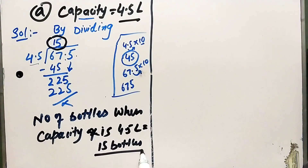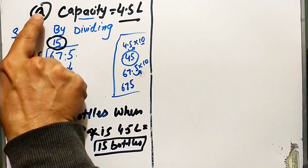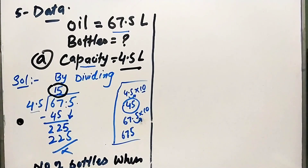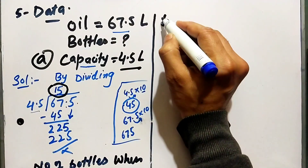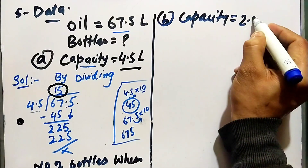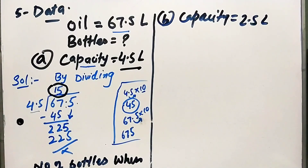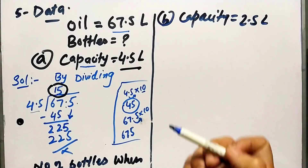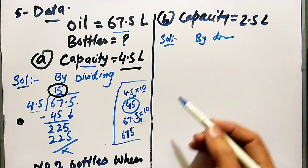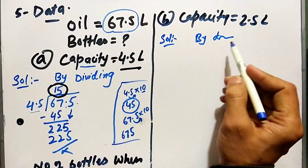The number of bottles is 15. Clear? The number of bottles is 15. This is easy. Now consider a variation: if the bottle capacity is 2.5 litres, what is the number of bottles?